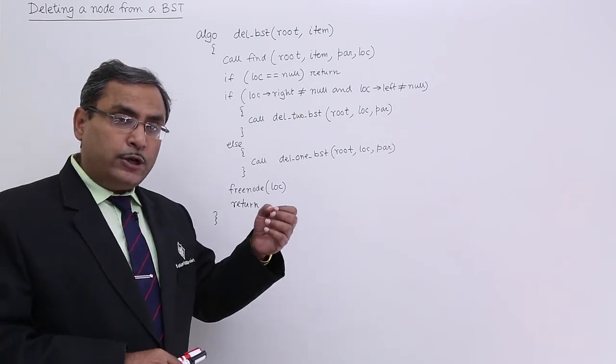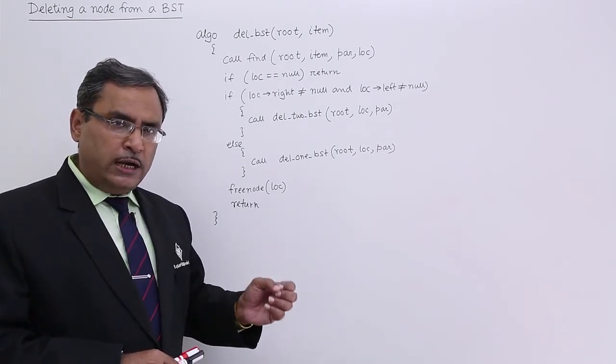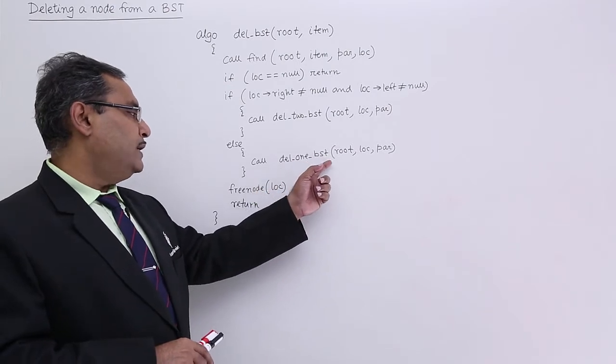That means here we are deleting that node which is having no child or one child. That is why del 1 BST.